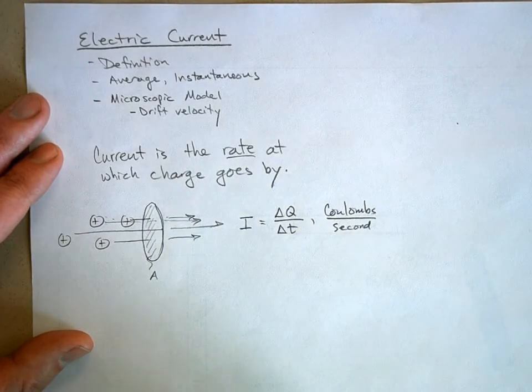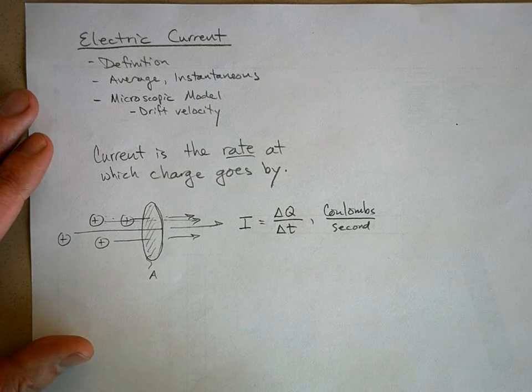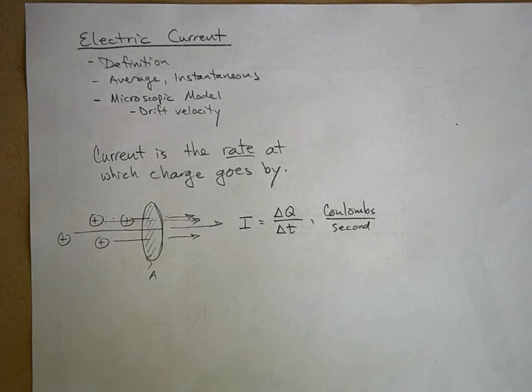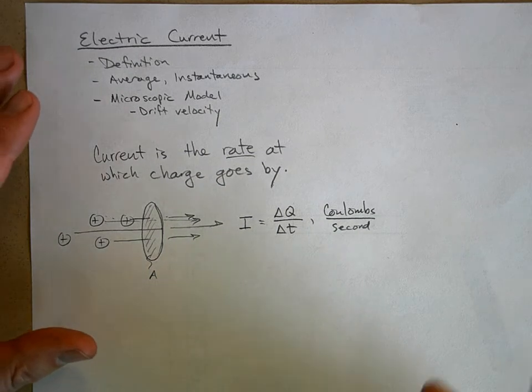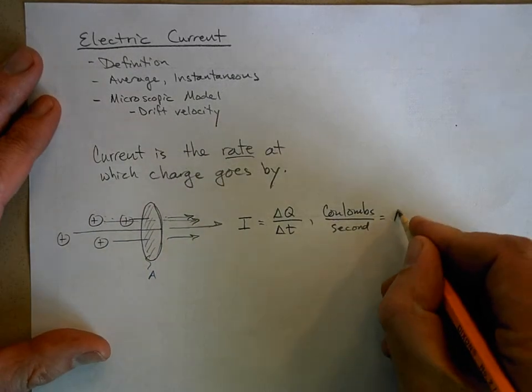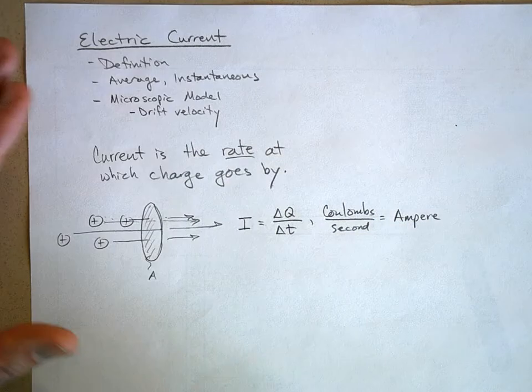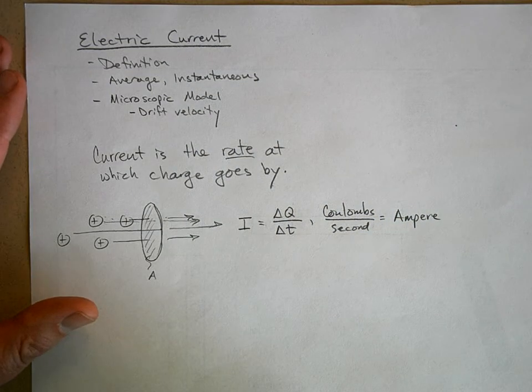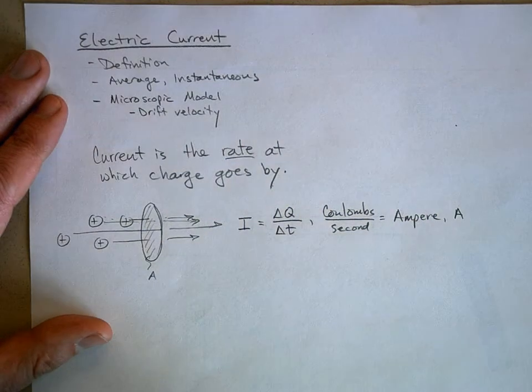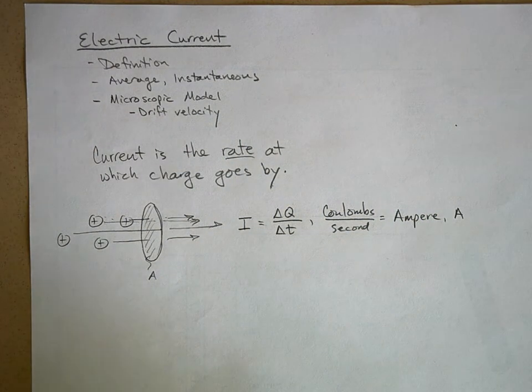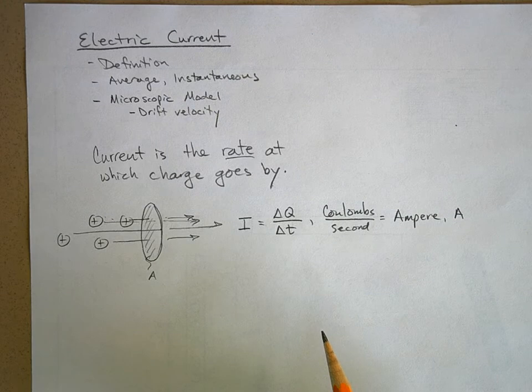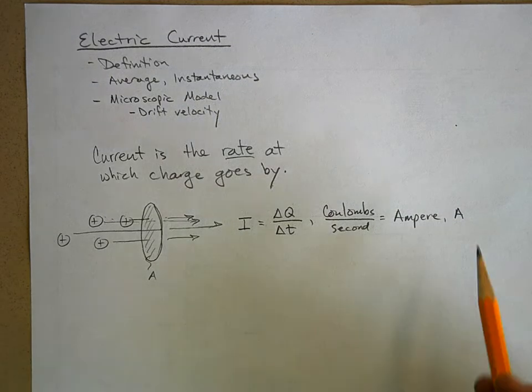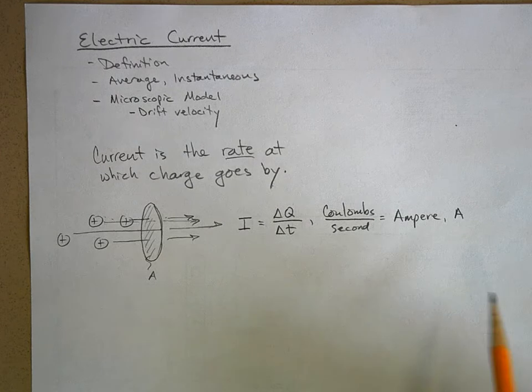If we look at the units, this is coulombs per second. In the metric system, as far as I know, there's only coulombs and seconds and amps. This is called an amp – well, it's called an ampere, but nobody calls it an ampere, they just call them amps. We use the letter A to represent it. If you see a capital A or a metric prefix in front of a capital A, those are amps. Capital A as a variable is usually area, but as a unit it means amps.